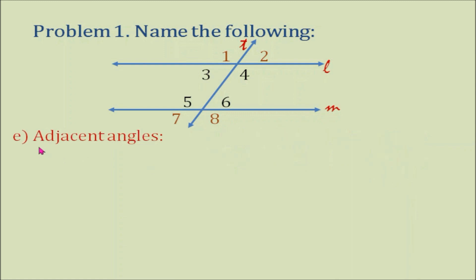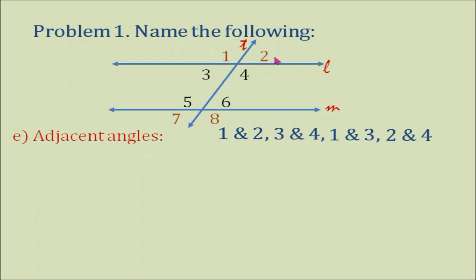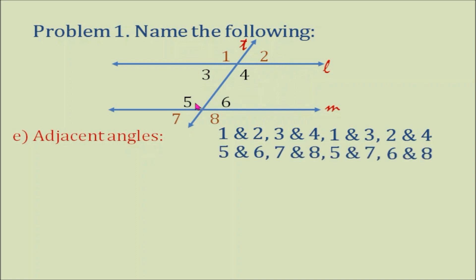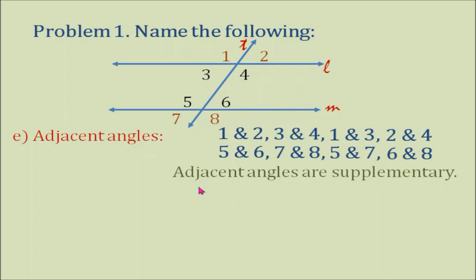How about adjacent angles? We also have many adjacent angles here: angles 1 and 2, angles 3 and 4, angles 1 and 3, angles 2 and 4, angles 5 and 6, angles 7 and 8, angles 5 and 7, and angles 6 and 8. Let's remember that adjacent angles here are supplementary.